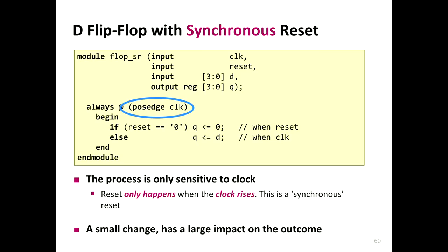Now for synchronous reset. The difference is that even if there is a change in the reset signal, the circuit will not reset until the clock has a positive edge. In the previous asynchronous circuit, whenever there's a change in reset, irrespective of the clock, the circuit got reset. But here, any changes in the reset signal have to wait until the next rising edge of the clock — it is synchronous to the clock signal. You simply remove the negedge of reset from the sensitivity list.